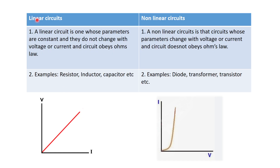Now we'll see the difference between linear and non-linear circuits. A linear circuit is one whose parameters are constant and do not change with voltage or current, and the circuit always obeys Ohm's law. A non-linear circuit is one whose parameters change with voltage or current, and the circuit does not obey Ohm's law.